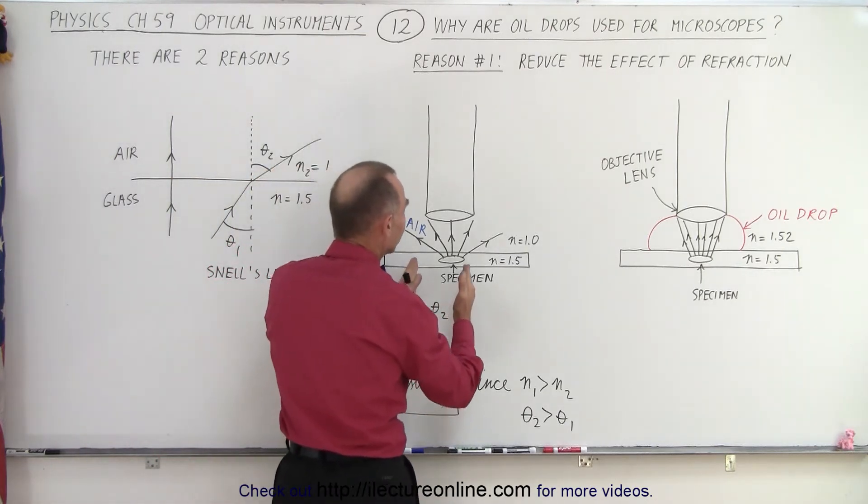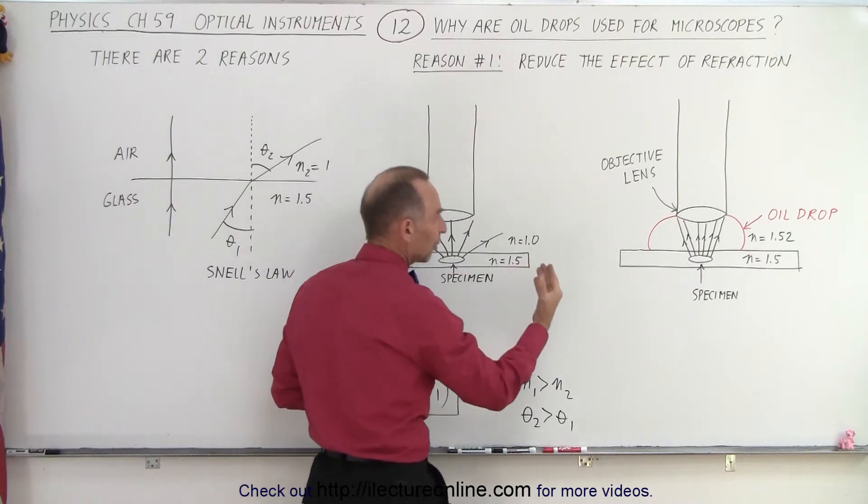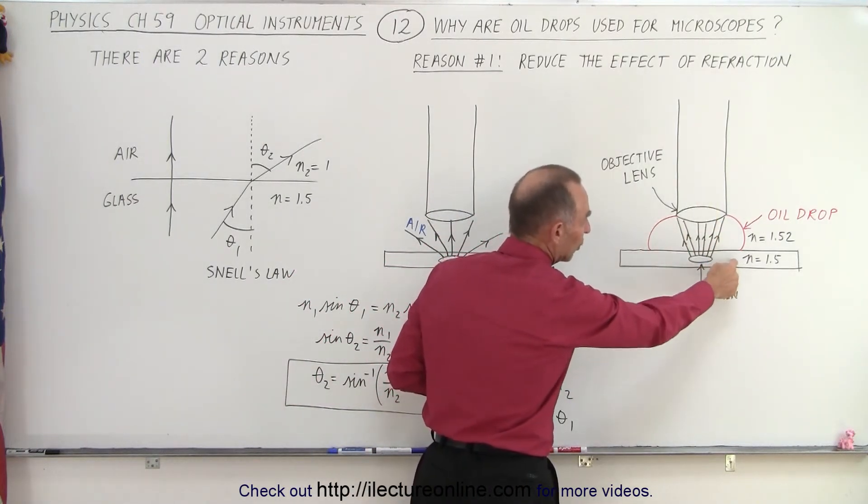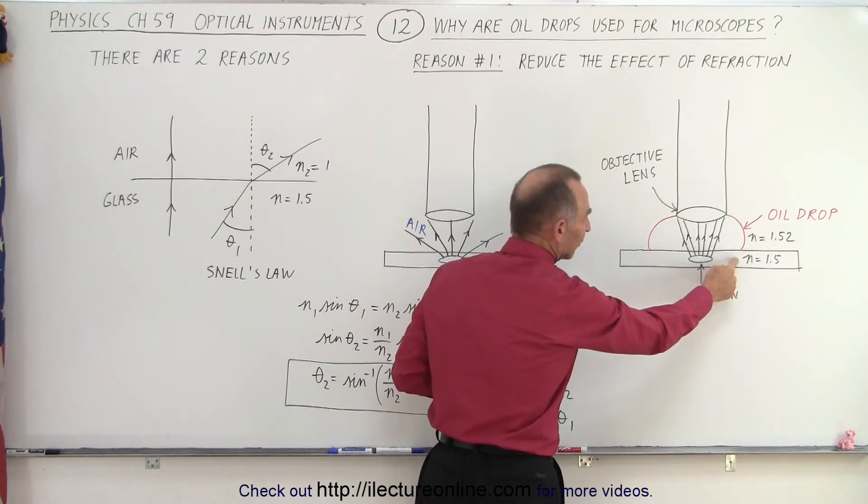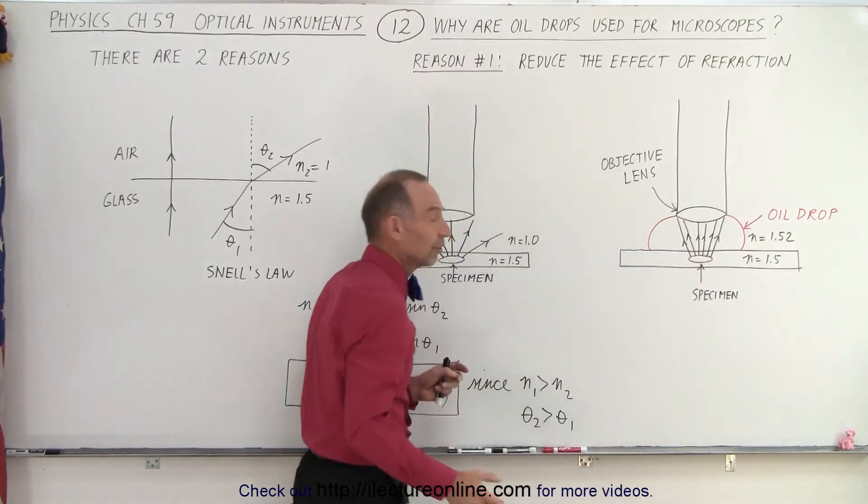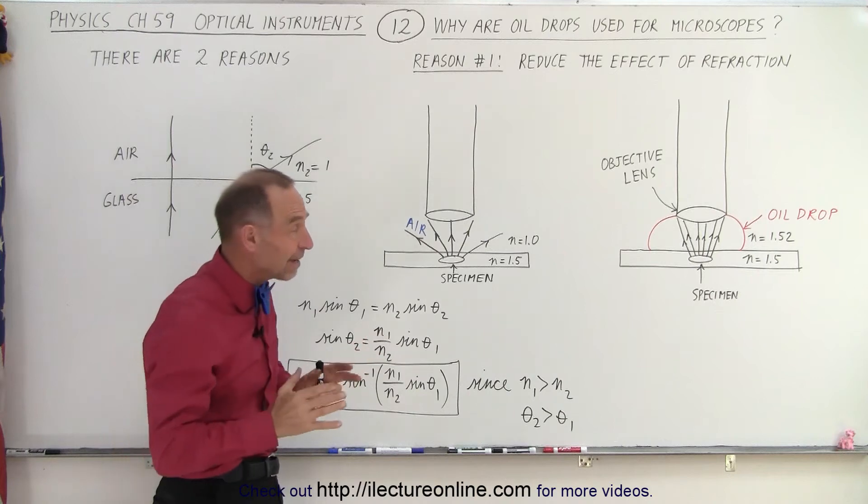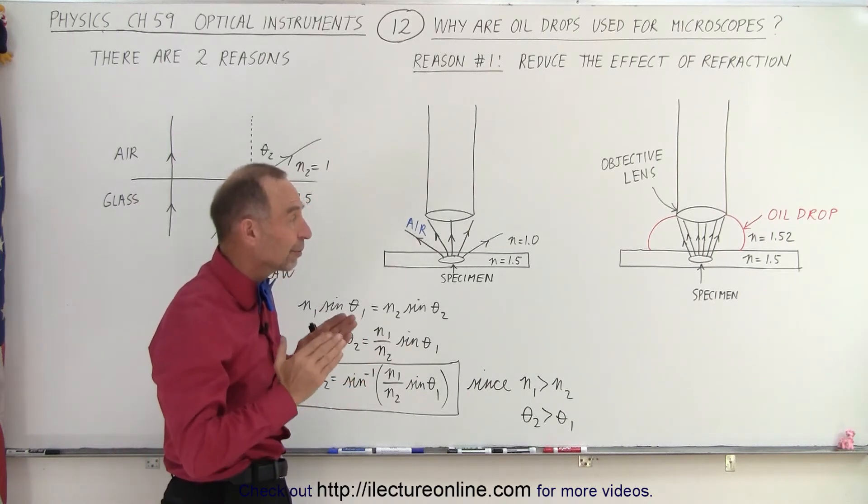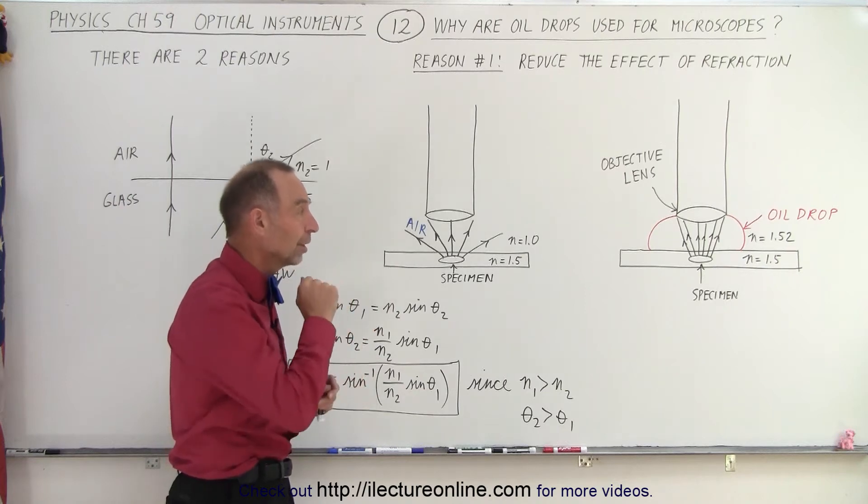So in order to see a sharper image that has a higher resolution, you want as much of the light to go into the lens and you accomplish that by placing an oil drop in there, reducing the refraction because notice that the index of refraction of glass and the index of refraction of oil is relatively the same. So you have very little change in direction of the light going from the glass to the oil to the lens.